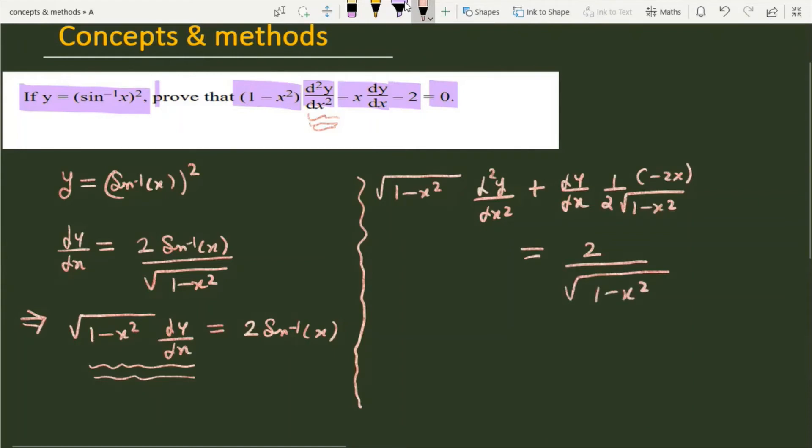So you can see here that 2 is canceled. And the next step is that we are just going to multiply by under root of 1 minus x square both sides. So this will become 1 minus x square d square y over dx square minus x dy over dx. And this is equal to 2.